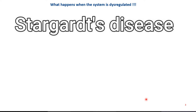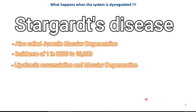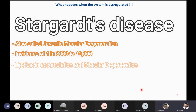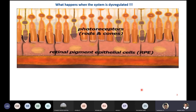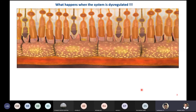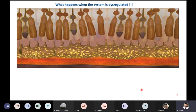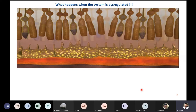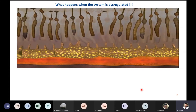Let's take an example of blindness: Stargardt's disease, which is one of the most common forms of juvenile macular degeneration with an incidence of 1 in 8,000 to 10,000. Lipofuscin accumulation and macular degeneration — the macula is the centermost interior part of the retina — are clinical characteristics of this disease. In Stargardt's disease, defective proteins in photoreceptors result in accumulation of lipofuscin in RPE cells as photoreceptors shed daily. Lipofuscin is composed of materials very toxic to the RPE cells. The RPE cells become engorged with this toxic material and over time begin to shrink and die. Since RPE cells are important for the survival of photoreceptors, when RPE cells are lost, the photoreceptors that lie directly above them also die, leading to blindness.